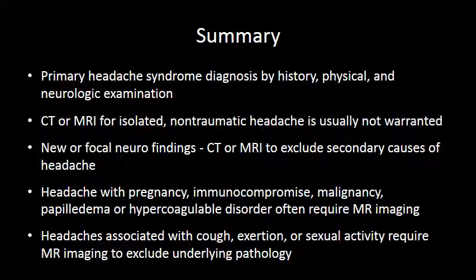There are many specific scenarios and patient conditions that predispose to severe neurologic problems. People presenting with headache and those predisposing conditions should get an MRI — examples include pregnancy, immunocompromised status, or known primary malignancy. An interesting category is headaches associated with cough, exertion, or sexual activity, as studies have shown a higher incidence of intracranial pathology causing a secondary headache when associated with these activities. Thank you for your time.